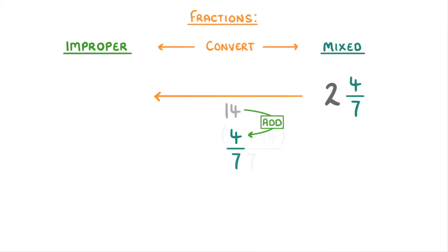So our fraction becomes (4 + 14)/7, which we can simplify to 18/7. So the improper fraction form of 2 and 4/7 is 18/7.